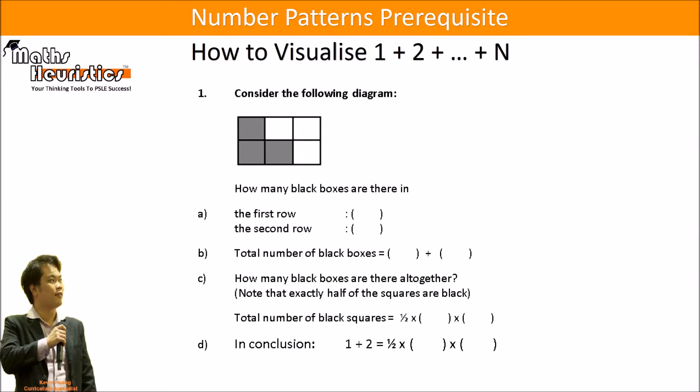All right, how do we visualize this pattern? Consider the following diagram. You have a 2 by 3 rectangle and in the first row you have one black box, second row you have two black boxes, so the total number of black boxes will be 1 plus 2.